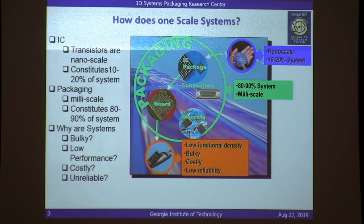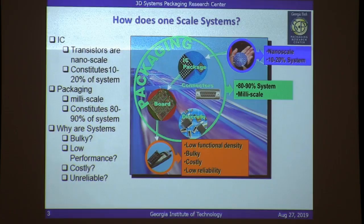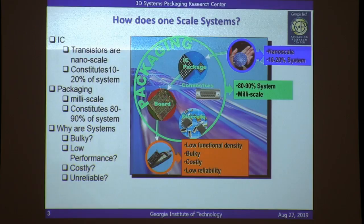If you look at system scaling, you can break a system into two parts: the transistors, and everything but the transistors. Transistors are at nanoscale — down to seven nanometer technology today. But if you take all of the ICs and transistors in a system, they constitute less than 20% of the system's volume. The remaining 80 to 90% comes from everything outside, and that's what we call packaging.